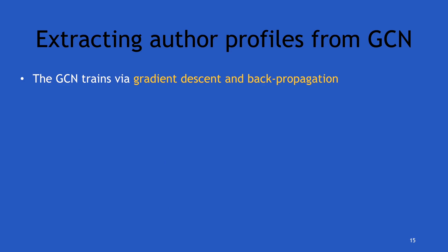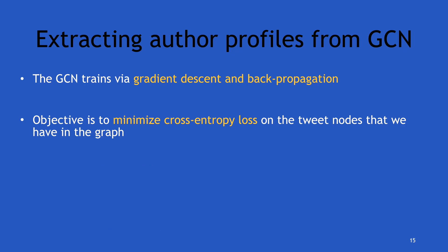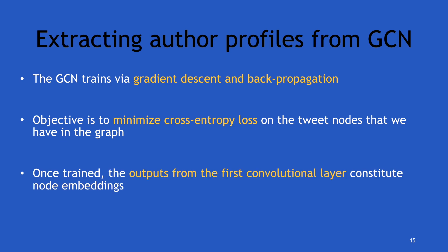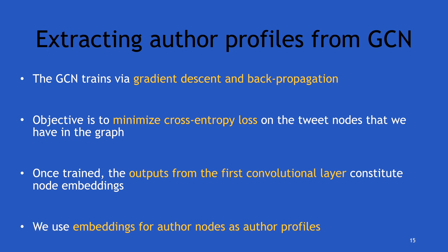This GCN trains via gradient descent and backpropagation. The objective was to minimize the cross-entropy loss on the tweet nodes, since only those have labels — we don't have labels for the author nodes. Once trained, the output from the first convolutional layer constitutes the node embeddings we used. For author profiles, we used the embeddings for the author nodes specifically.